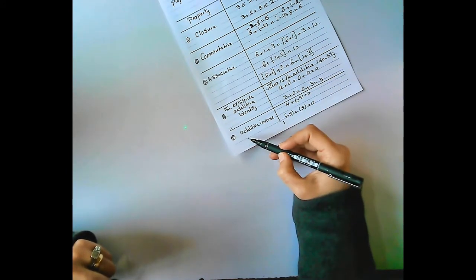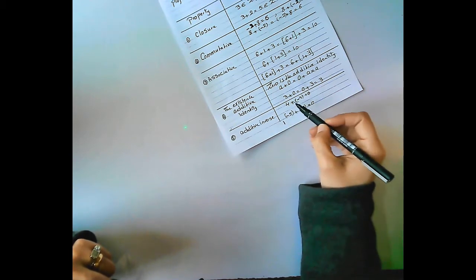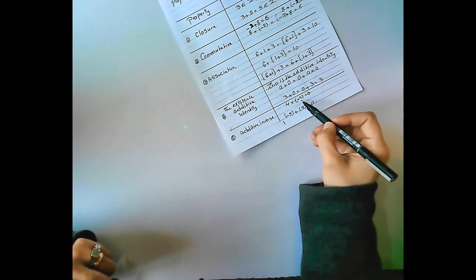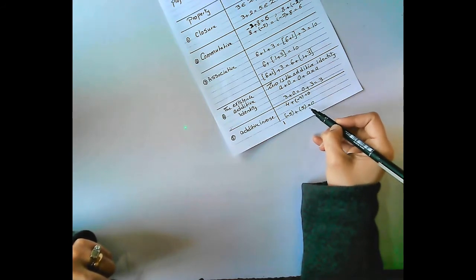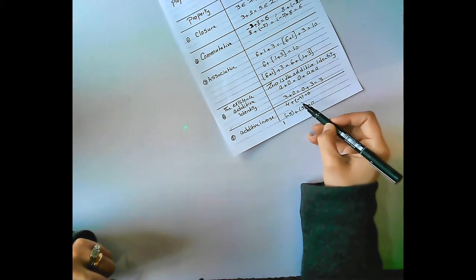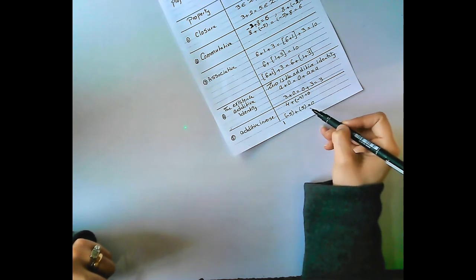Number 5: Additive inverse. 4 plus negative 4 equals 0. Negative 5 plus 5 equals 0. So the additive inverse of 4 is negative 4, and the additive inverse of negative 5 is 5.